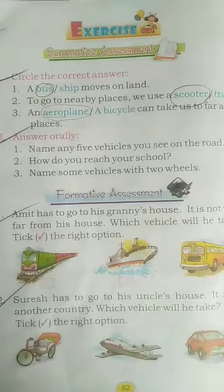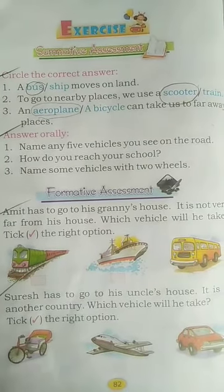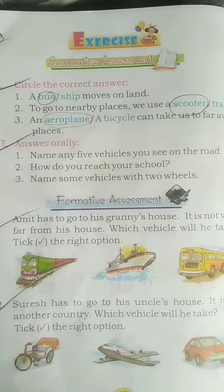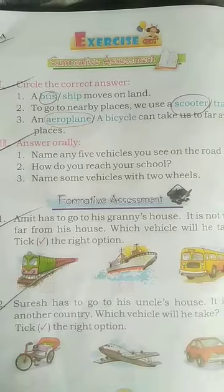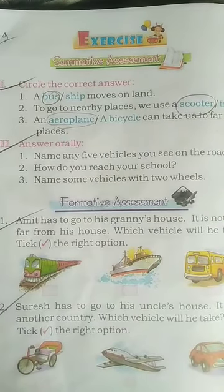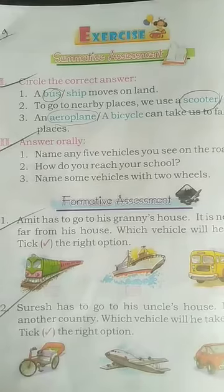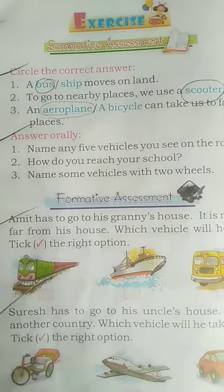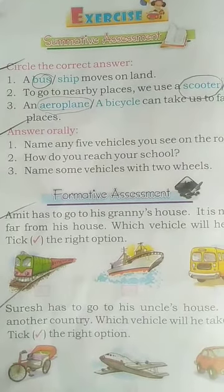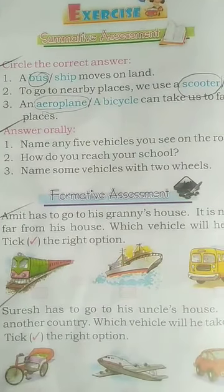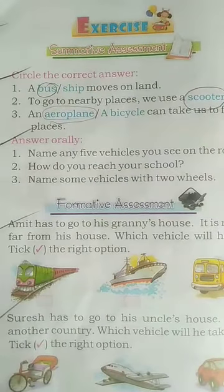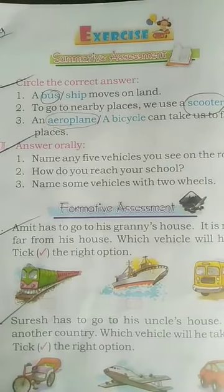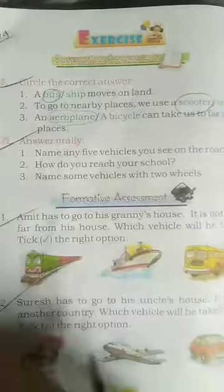Next, answer orally: name any five vehicles you see on the road. Next: how do you reach your school? I reach school by bus. Name some vehicles with two wheels — bicycle, scooter, motorcycle.